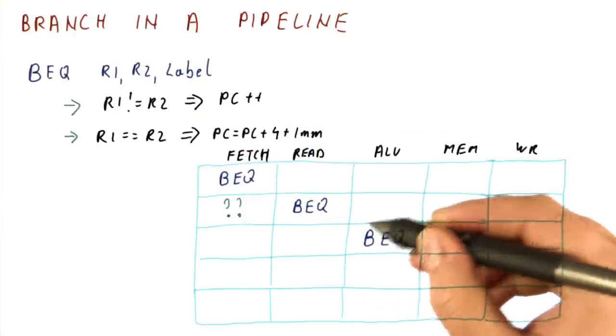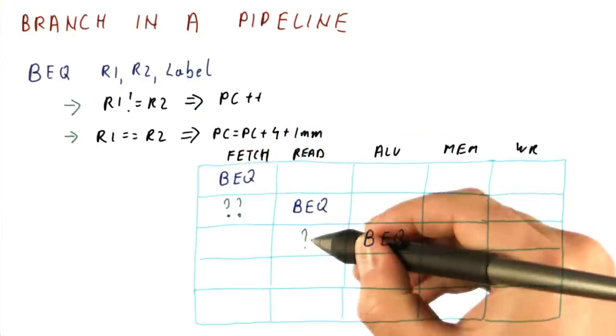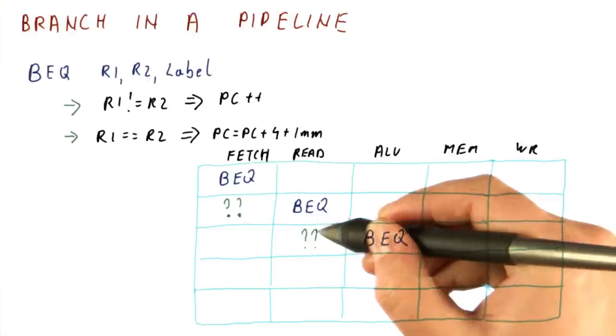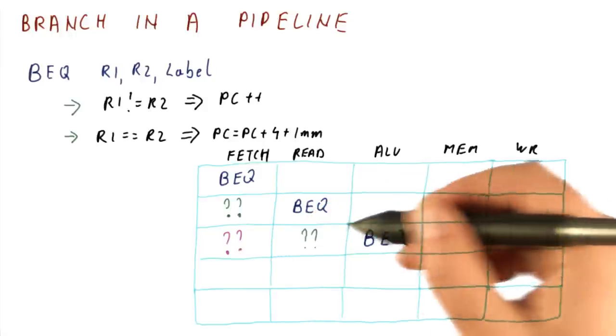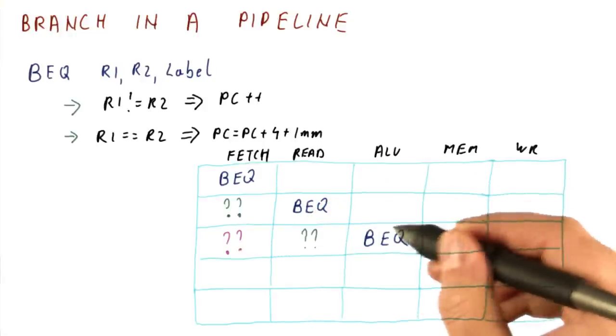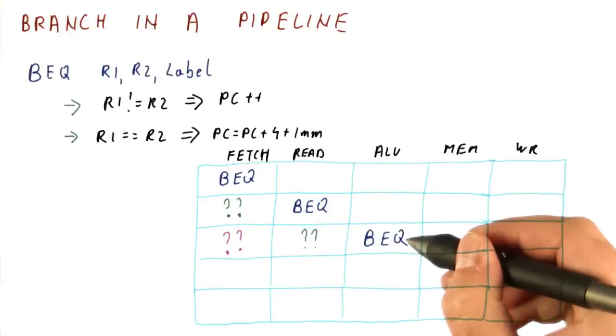So when the branch is in the ALU stage, the green instruction we have fetched after the branch moves here. And we fetch another instruction. Let's say that's a purple instruction. At the end of this cycle, we finally know whether the branch is taken.